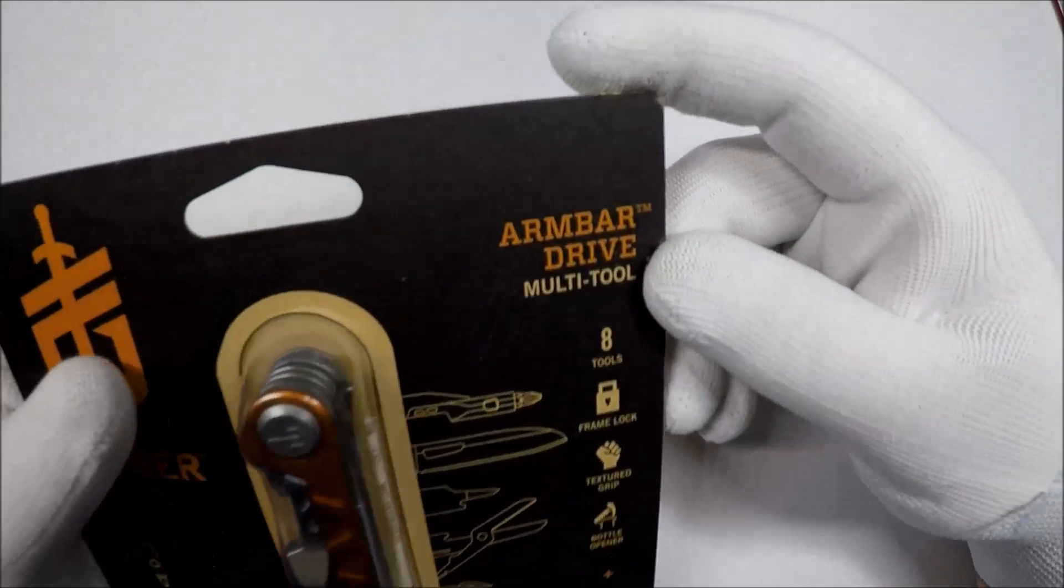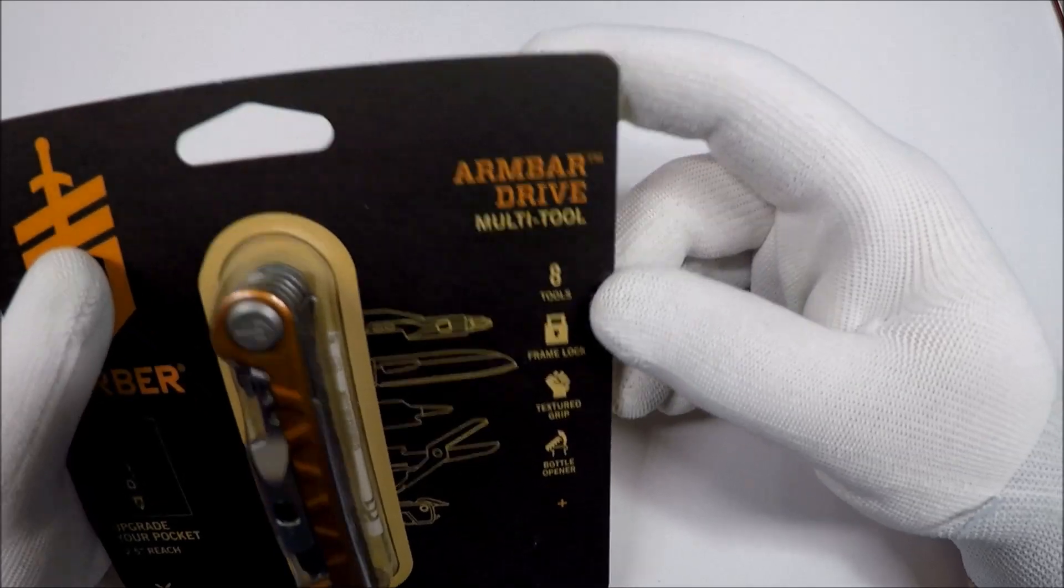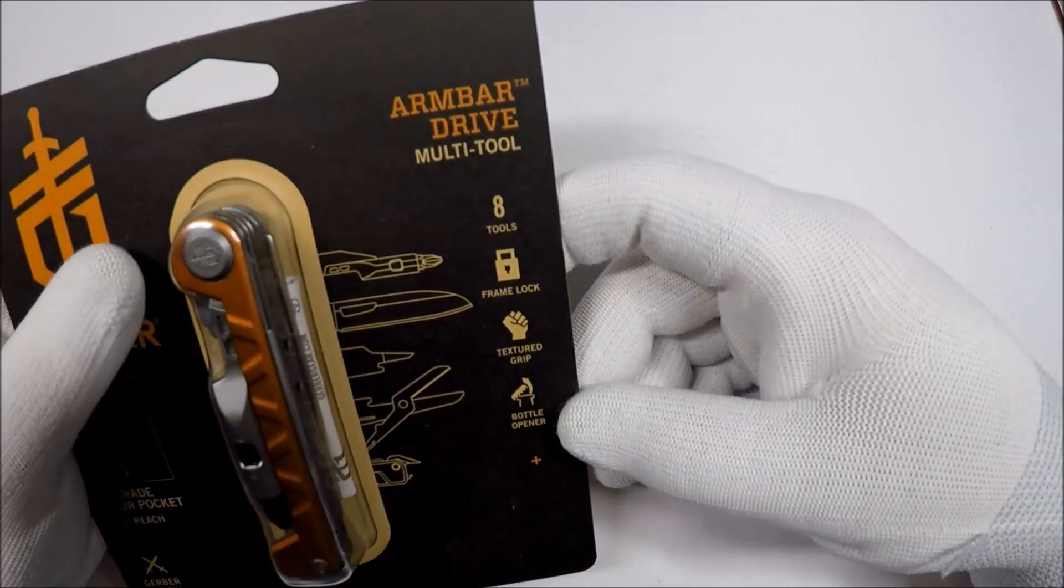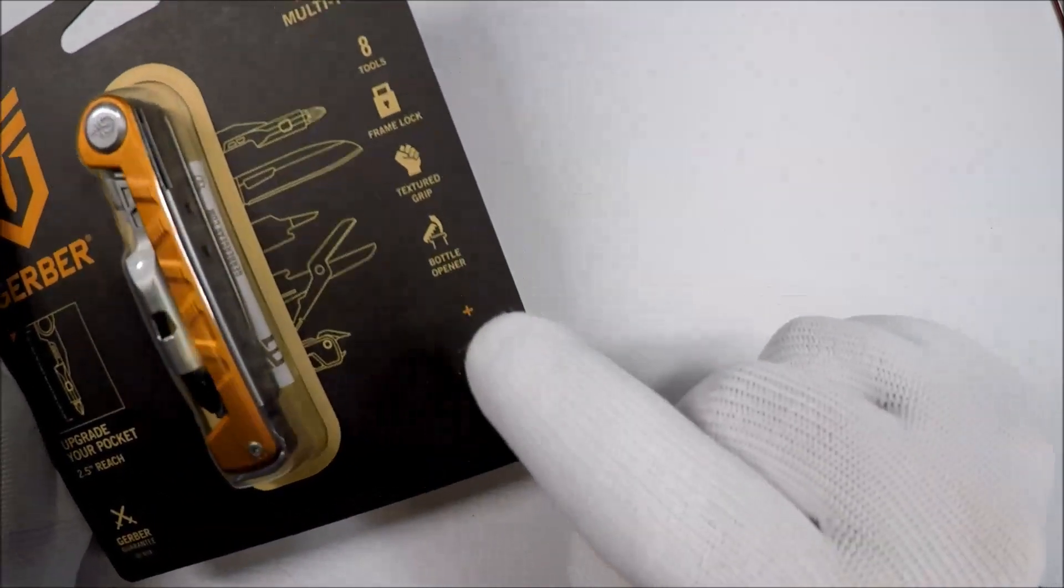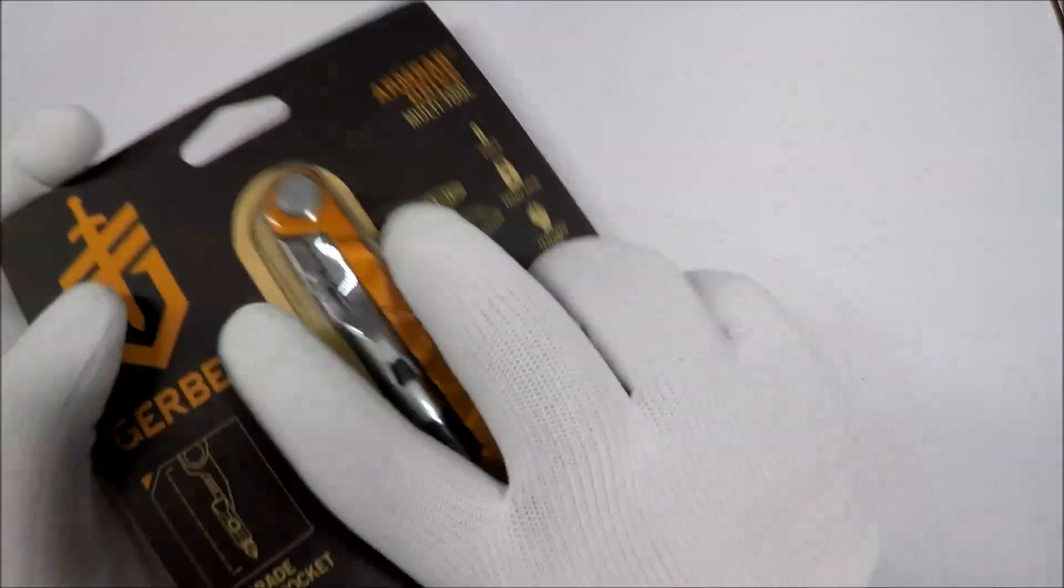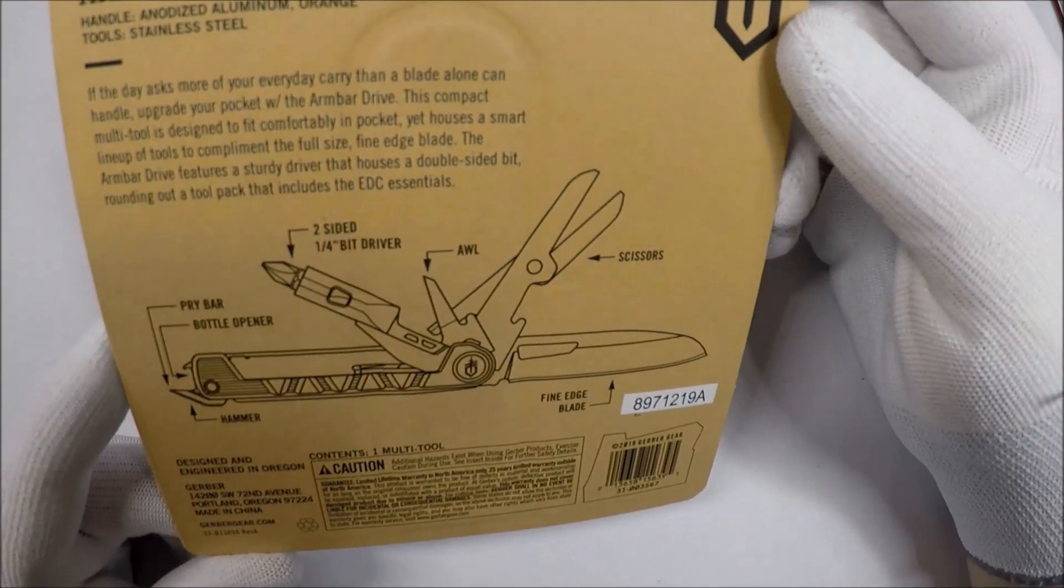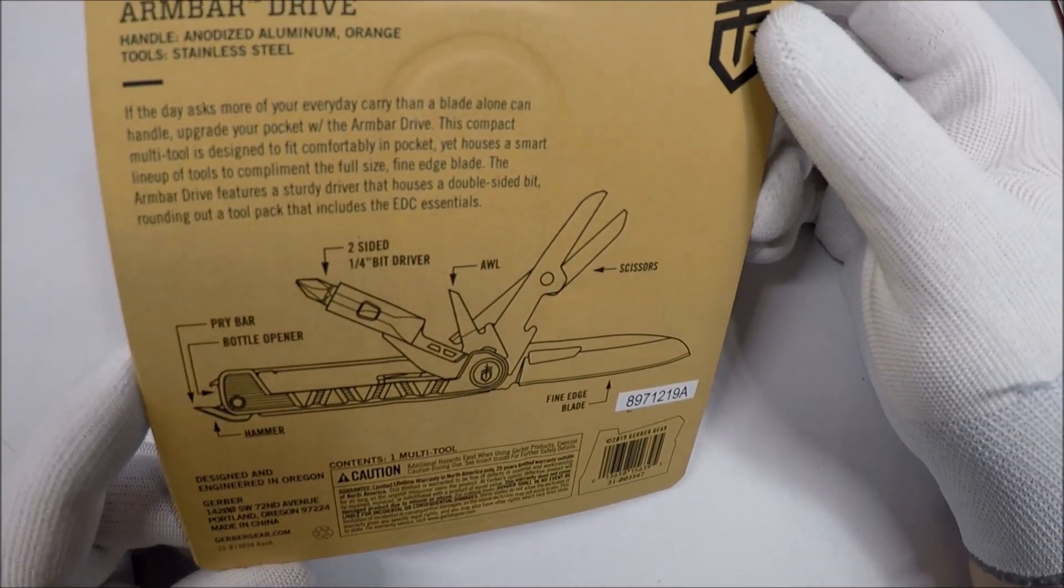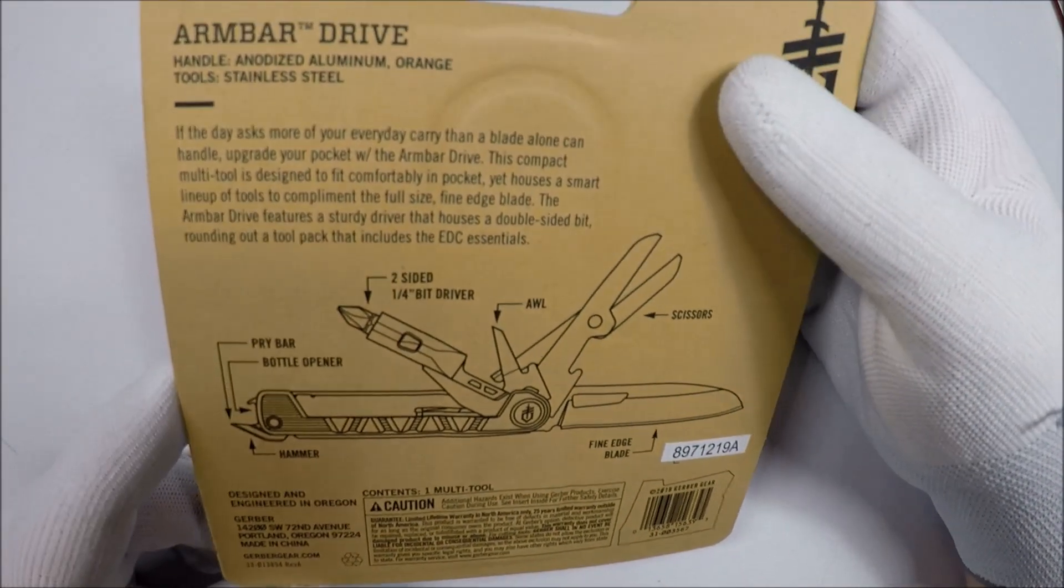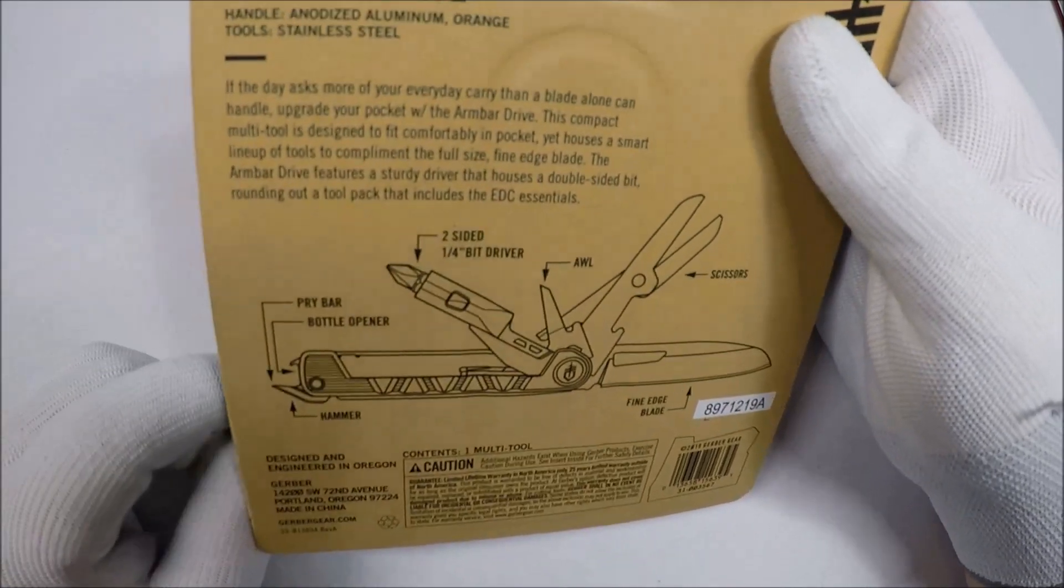So looks like we get a screwdriver instead. Let's see. Texture grip, frame lock, bottle opener, which if it's like the other one, it is. It's kind of cool. So let's take a look and see what we got. Got the knife, got the screwdriver, two-sided. Let's take a look at that.